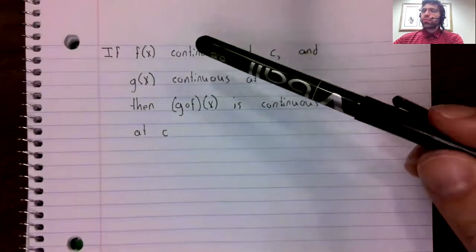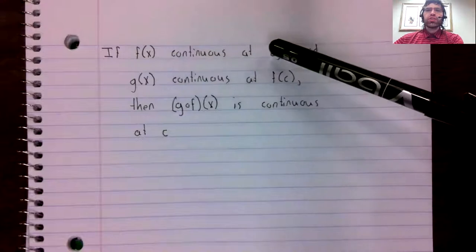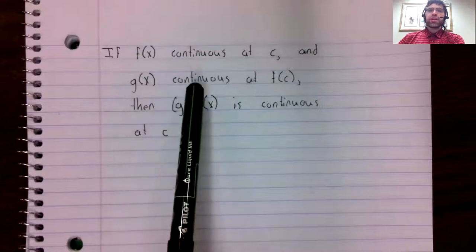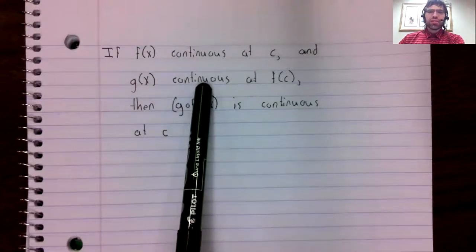Because we're talking about f(x) being continuous at c, and then g(x) being continuous not at c, but at f(c).